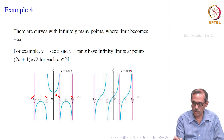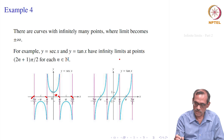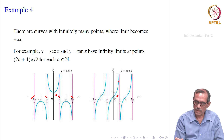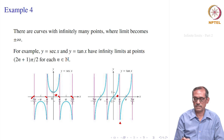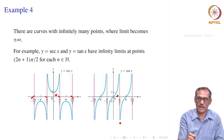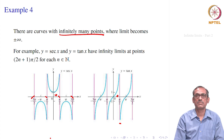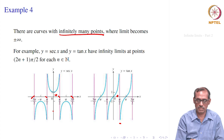Similarly, in y = tan(x), at those odd multiples of π/2 you get the asymptotes: the limit as x → π/2 from the left becomes +∞, and from the right portion of the curve it becomes -∞. That is how there can be infinitely many points where the limit becomes plus infinity or minus infinity — all sorts of things can happen.